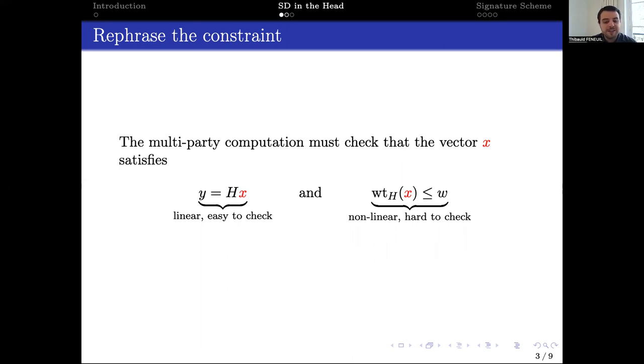The linear relation is easy to check with MPC, but it is much harder for the constraint on the Hamming weight. For this reason, we replace the second constraint with an equivalent one involving polynomials.